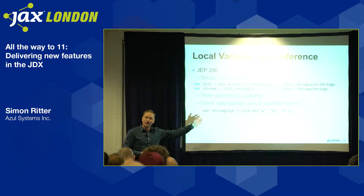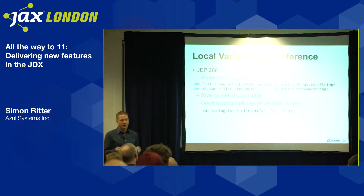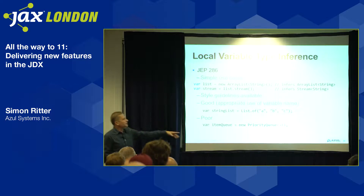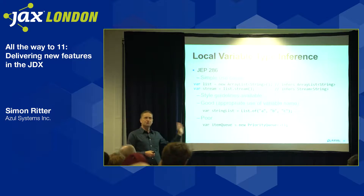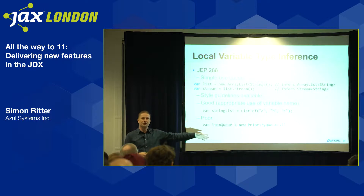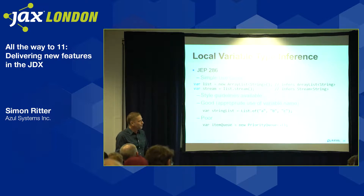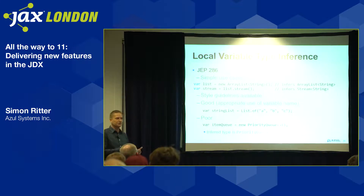There are style guidelines for using var because there are good uses but also ways to abuse it. Good uses include naming your variables appropriately — var stringList is fine; var s is not. One thing to watch: var can infer generic types too. If you use the diamond operator with var on a new PriorityQueue<>(), the compiler will infer type Object, so be careful how you use this feature.